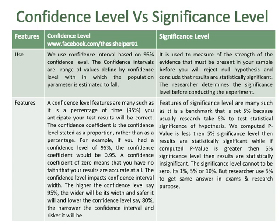The researcher determines the significance level before conducting the experiment. Features of confidence level include: it is the percentage of time, 95%, that you anticipate your test results will be correct. The confidence coefficient is the confidence level stated as a proportion rather than as a percentage. For example, if you had a confidence level of 95%, the confidence coefficient would be 0.95.